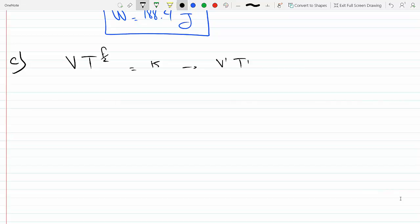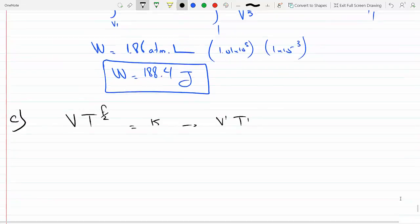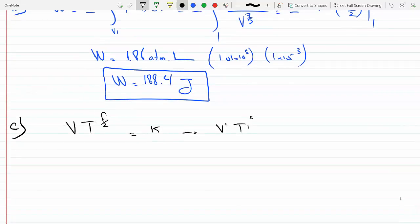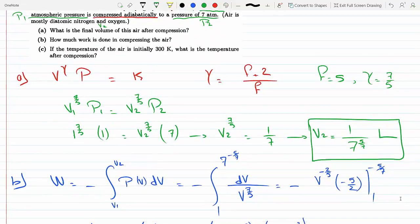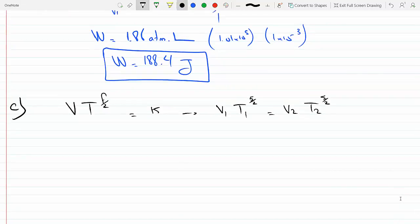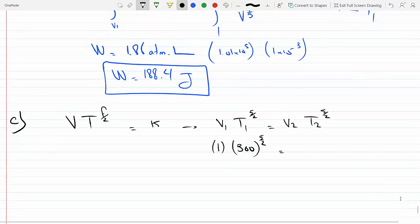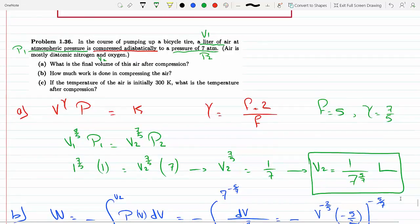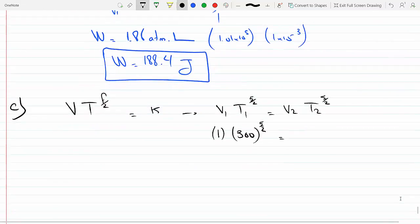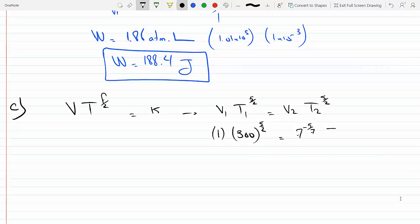That means V1 T1 raised to, we said f is 5, so this is 5/2, has to equal V2 T2 raised to the 5/2. We know T1 is 300, so we're going to plug in now 300 to the 5/2. We know V1 is 1 liter. We know V2, we've calculated V2 to be 1, 7 to the minus 5 over 7, and this is unknown.